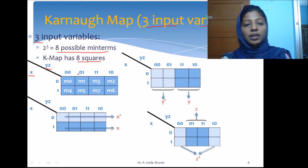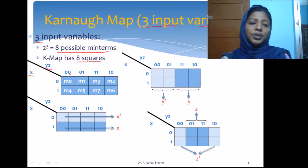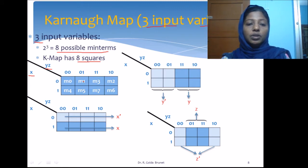It is worth noting that the combinations written for yz follow the Gray code sequence. We have 00, 01, and instead of writing 10 next, we write 11 and then 10. This ensures that adjacent blocks vary by only 1 bit. For example, 00 and 01 differ only in the z bit, and across rows x is 0 with only the y value changing.